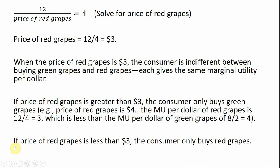If the price of red grapes is less than $3, the consumer will only buy red grapes, because the marginal utility per dollar of red grapes will exceed the marginal utility per dollar of green grapes. For example, if the price of red grapes is $2, then 12 divided by 2 equals 6, which exceeds the marginal utility per dollar of green grapes. So the consumer's demand for red grapes will be positive when the price is less than $3.